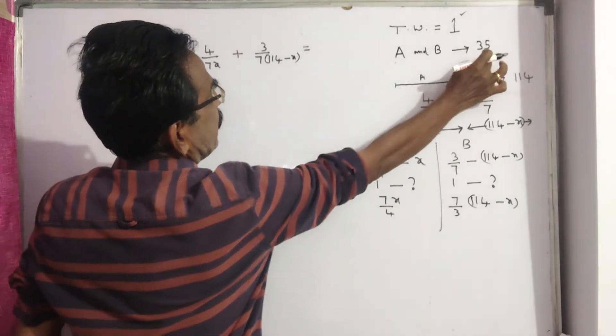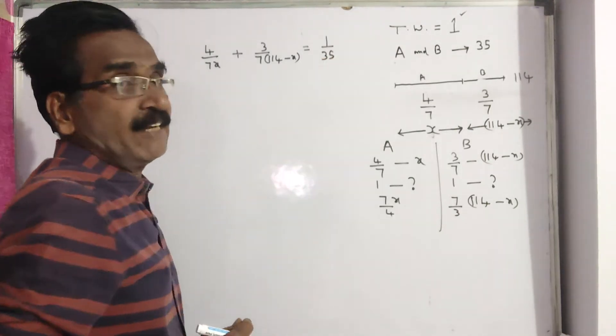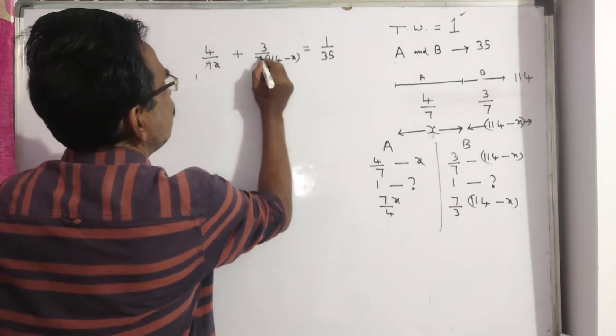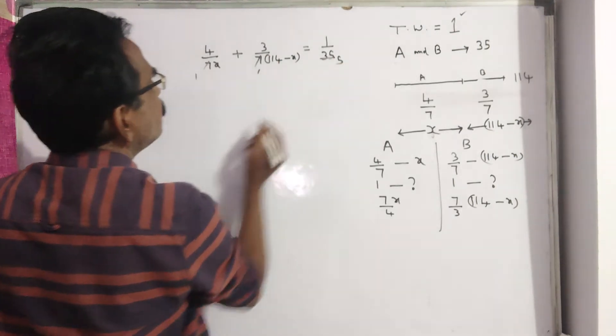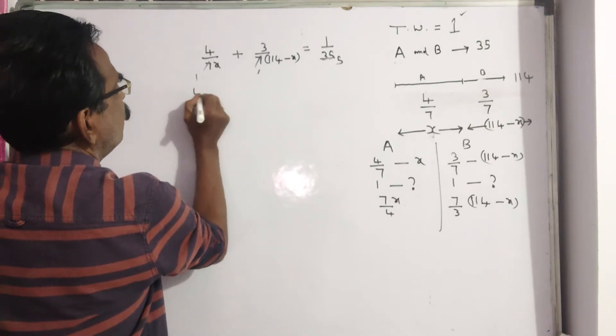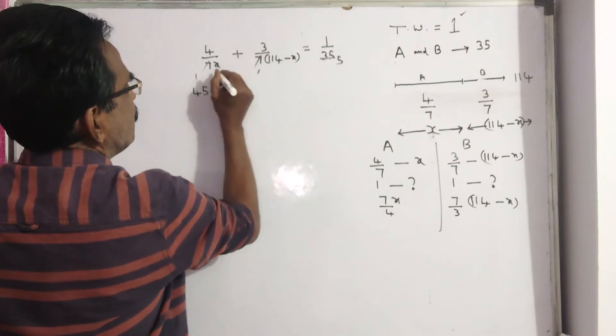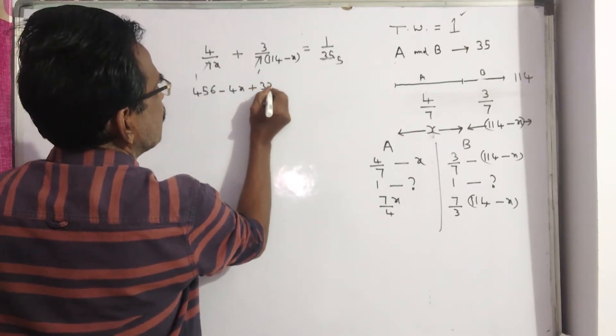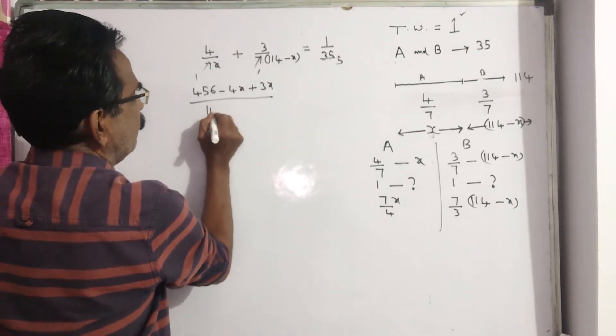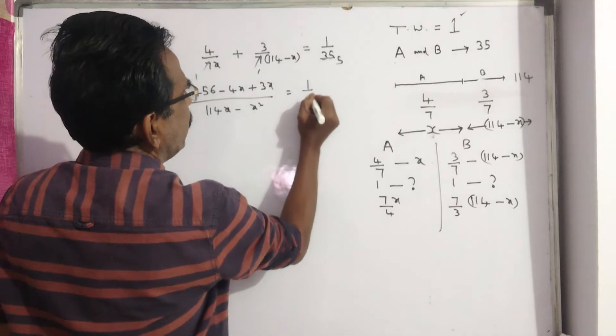The total work must be equal to A plus B's. A plus B, 1 day work of A plus B is 1 by 35. Now, 4 into 114 minus x, 456 minus 4x plus 3x by x into 114 minus x is equal to 1 by 35.